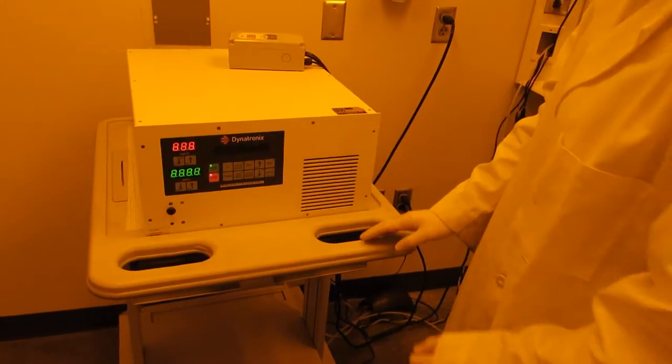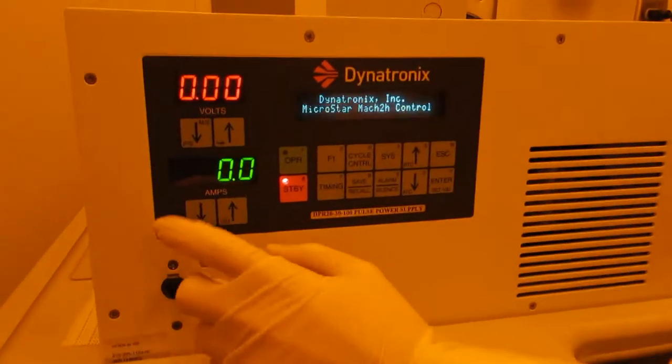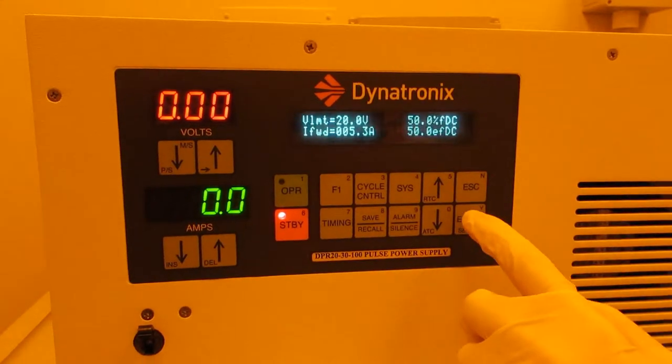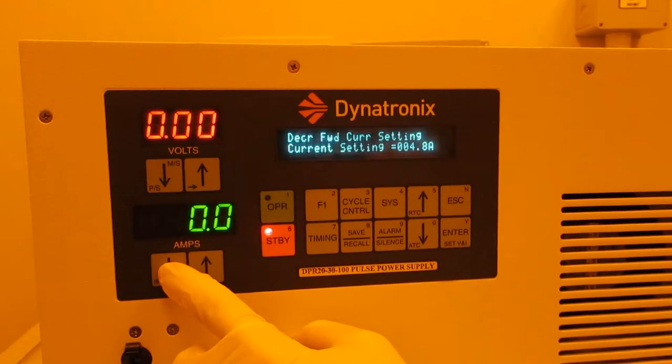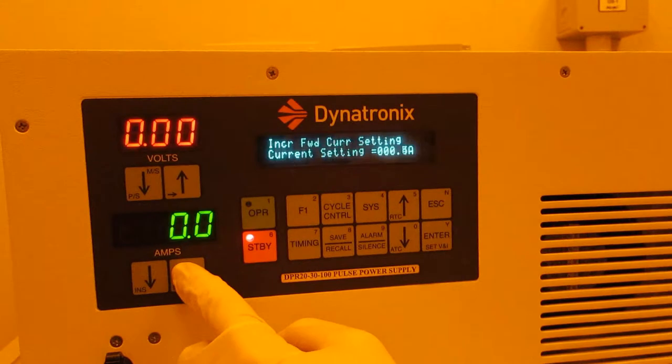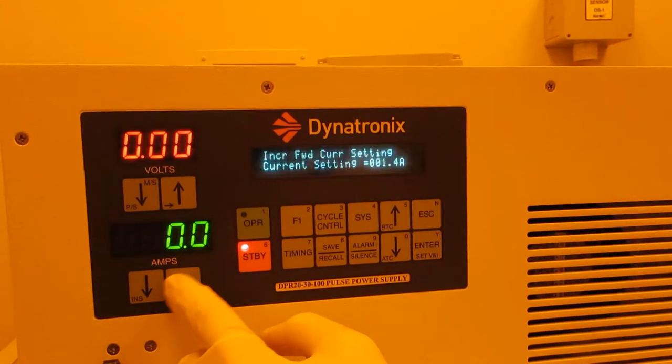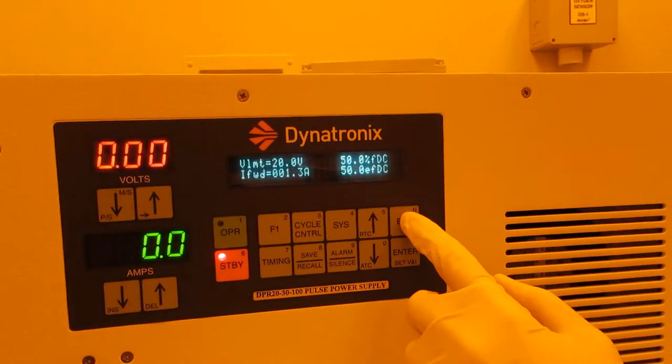Then you come over to this guy. You flip it on. You're going to want to set the amps. So you go over here to set V and I. And you will go down and you start to lower the current to the 1.3. There we go. Hit enter and escape.